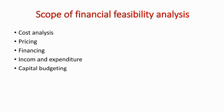The next category is income and expenditure, which we need to assess as part of the financial feasibility study. After that is capital budgeting. Capital budgeting refers to the number of funds we invest in — that is, the funds we are investing, involving cash outflow and inflow.